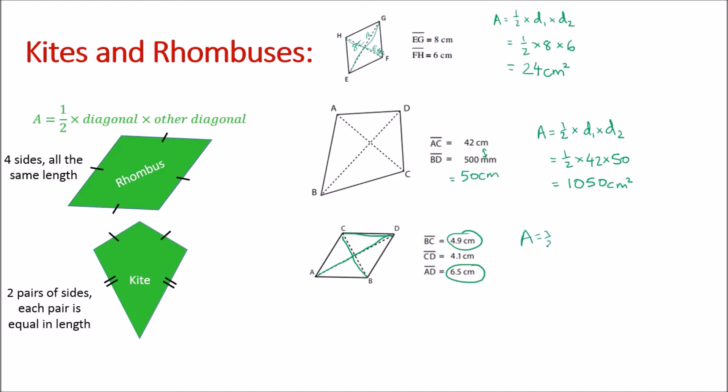So area here equals half times d1 times d2, which is half times 4.9 times 6.5. And there's our answer: 15.925 cm².